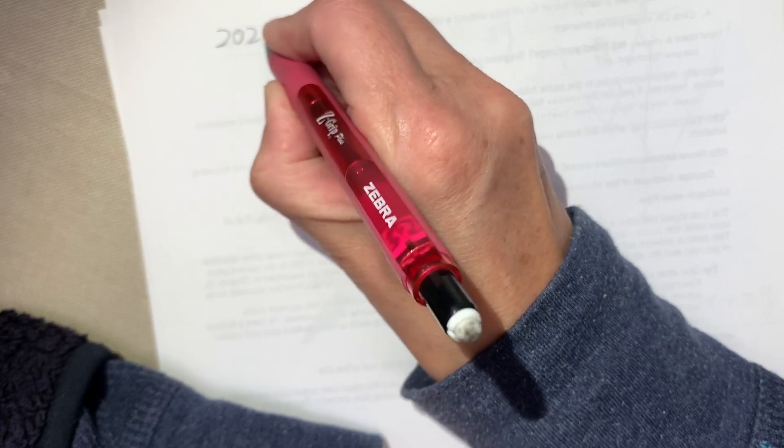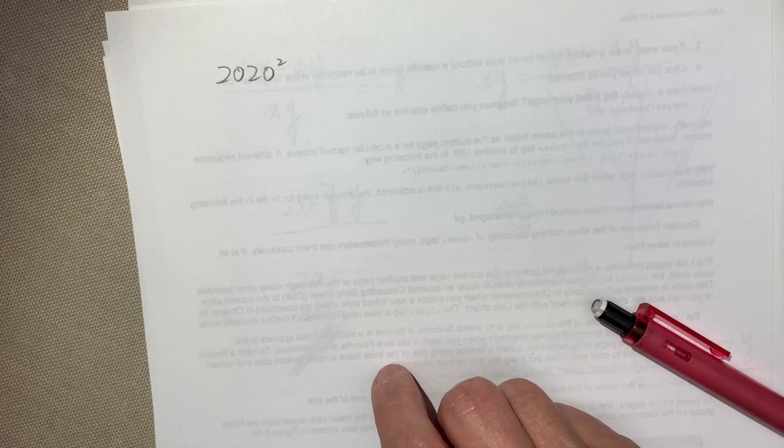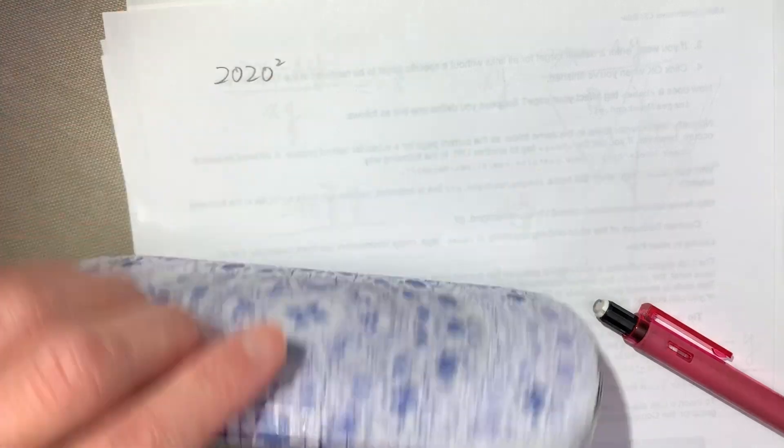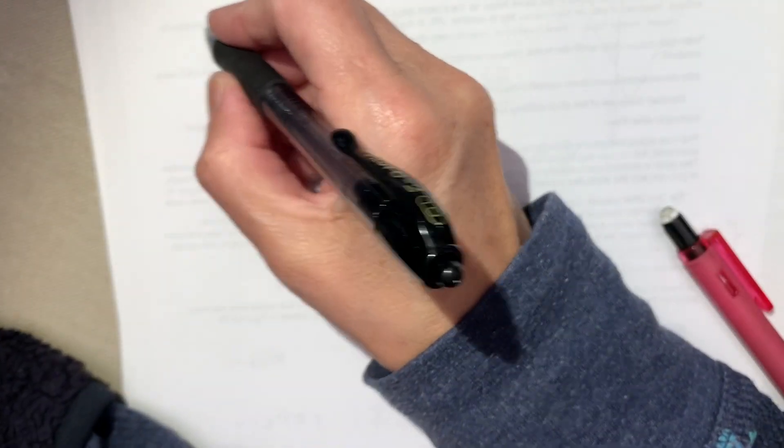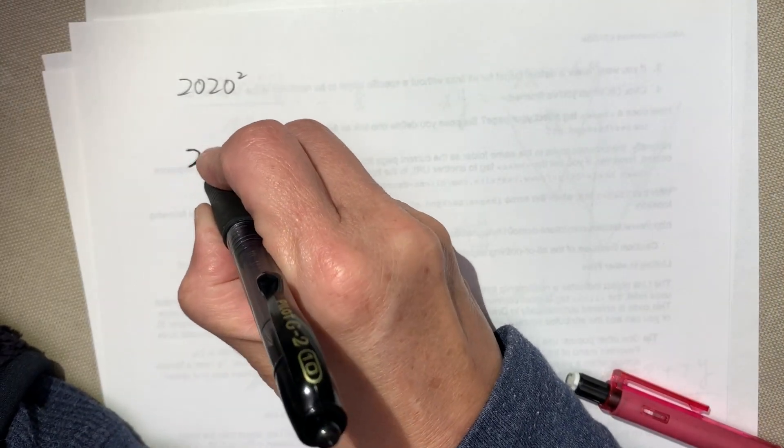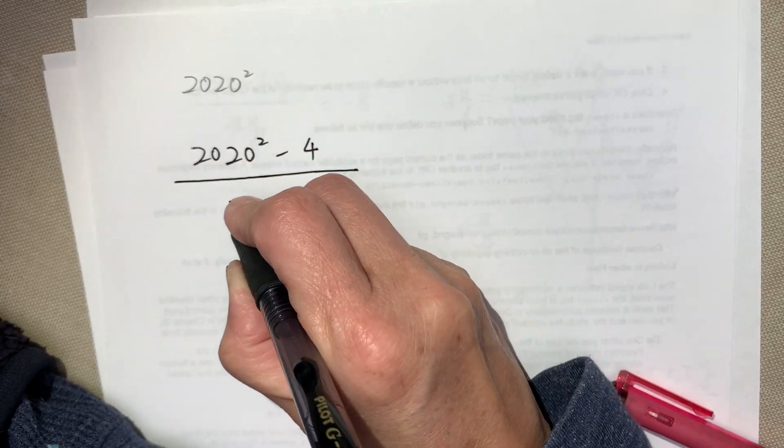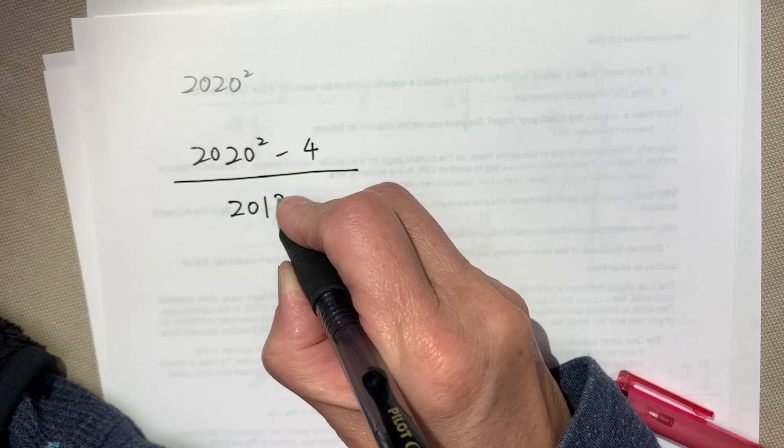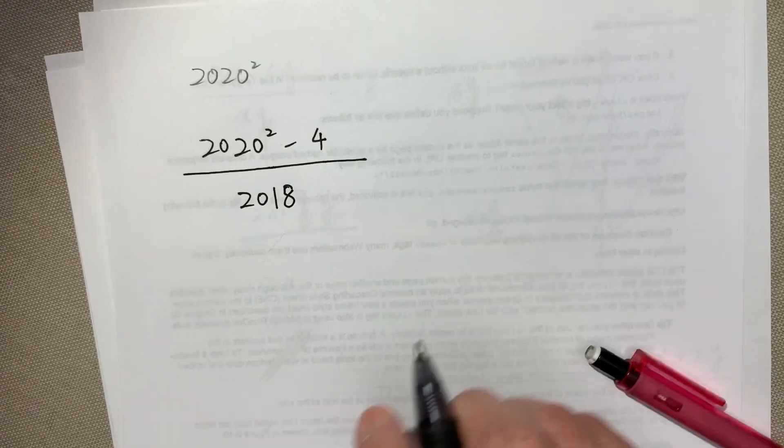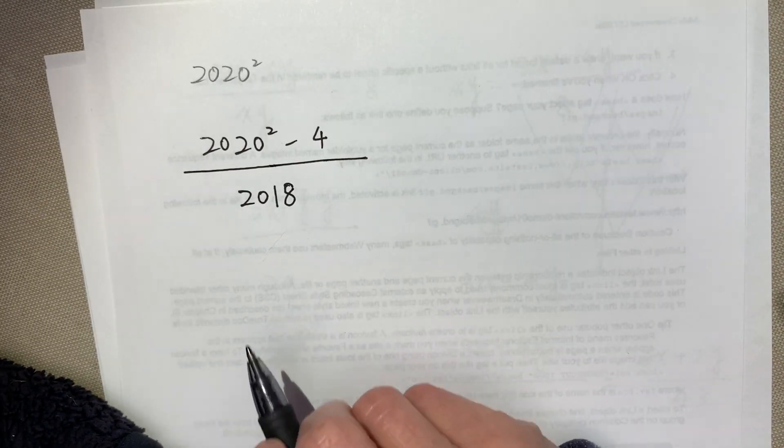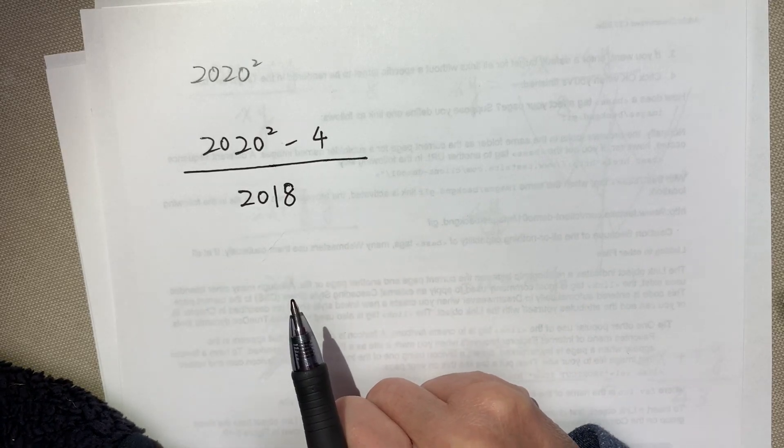First problem: 2020 squared. Let me change to a better pen, not so shaky. We use a strong pen, not in a rush. Write it again. 2020 squared minus 4 over 2018. So, 2020 squared minus 4 divided by 2018.